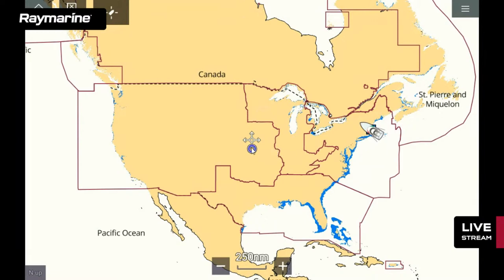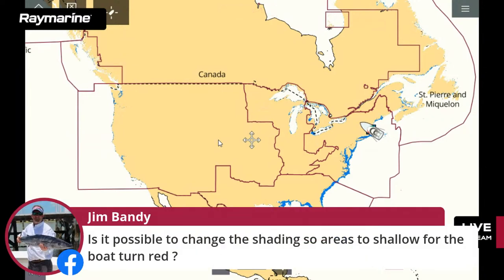Jim Bandy would like to know if it's possible to change the shading so areas too shallow for the boat turn red. We can't turn them red, but we can adjust the colorized shading to give you control over the shallows. Let me change views and show you how — coming back to Boston Harbor and switching from Government view back to Leisure view.